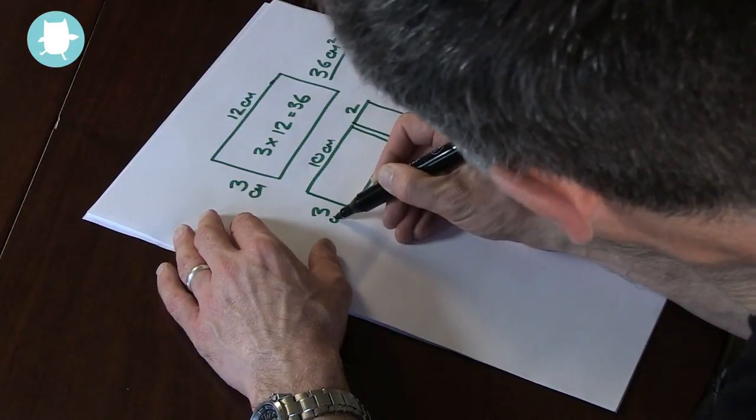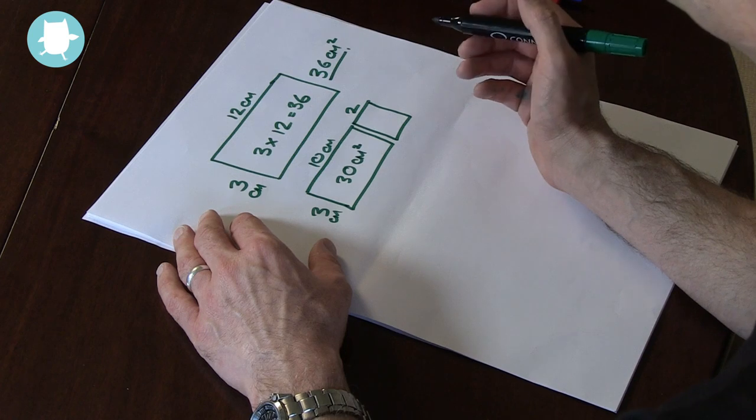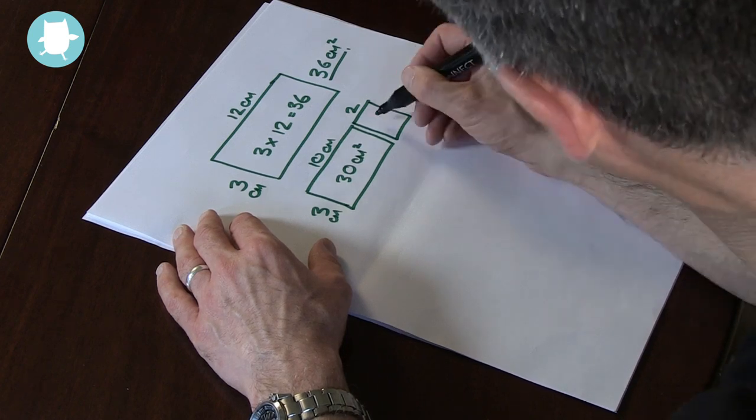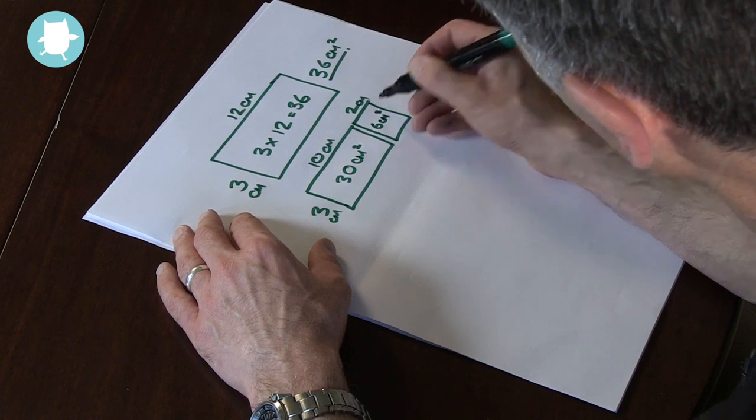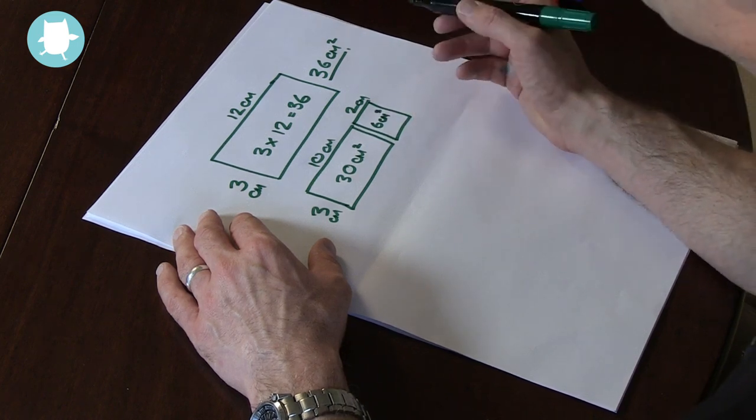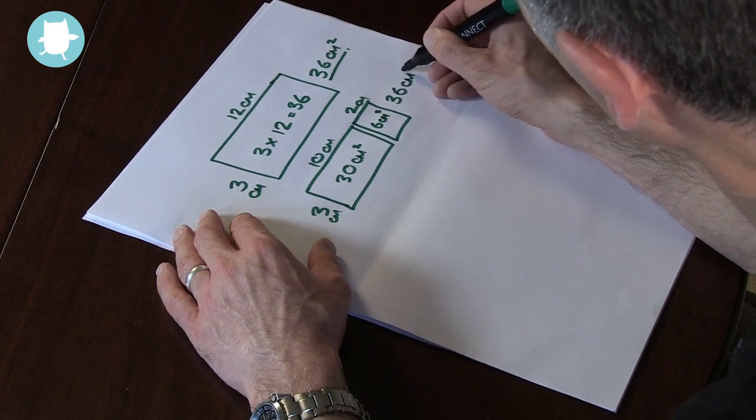By simply breaking it down into smaller pieces. I start by multiplying 10 centimeters by 3 centimeters, and then I multiply 2 centimeters by 3 centimeters, and add them up to give me 36 square centimeters.